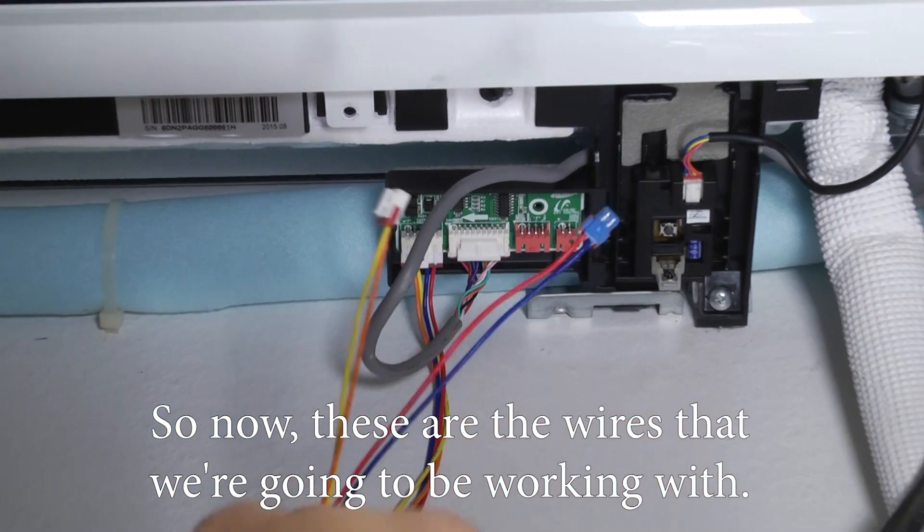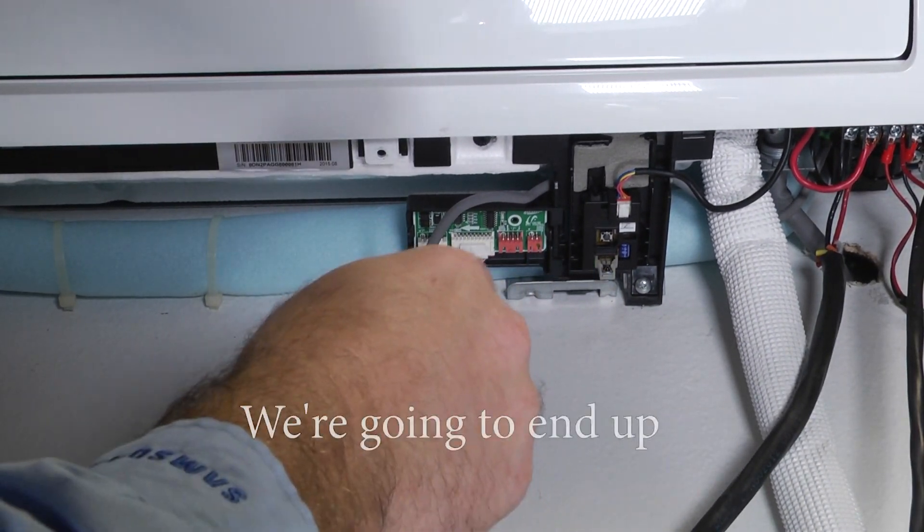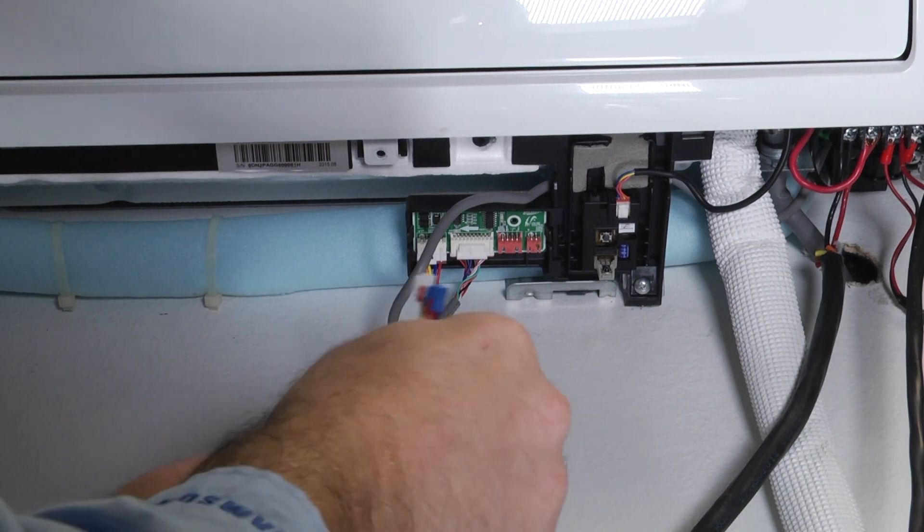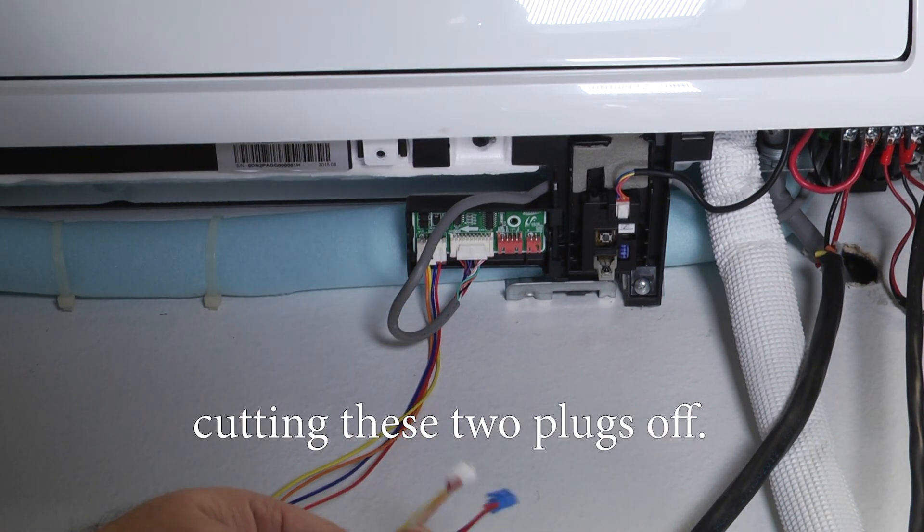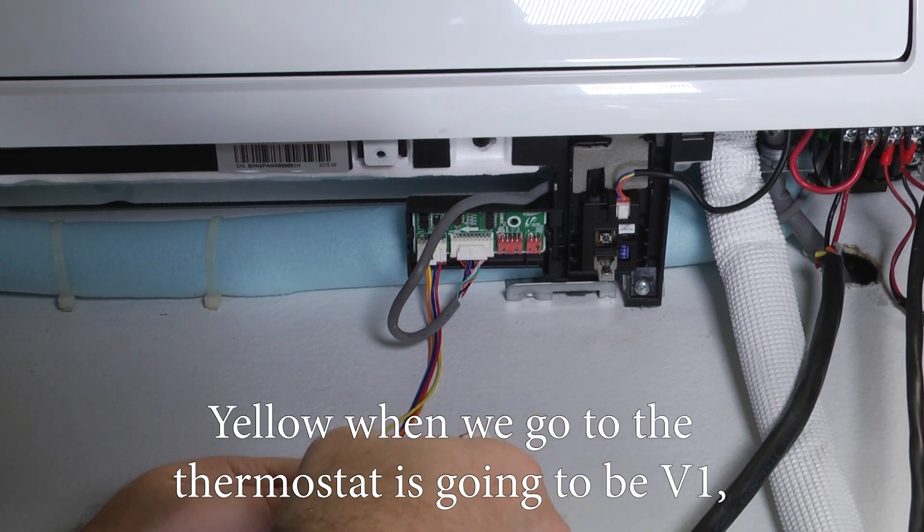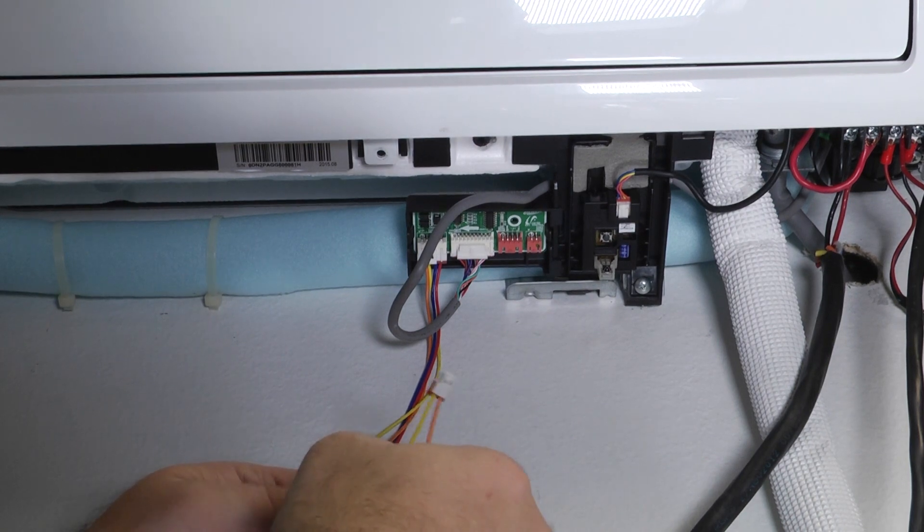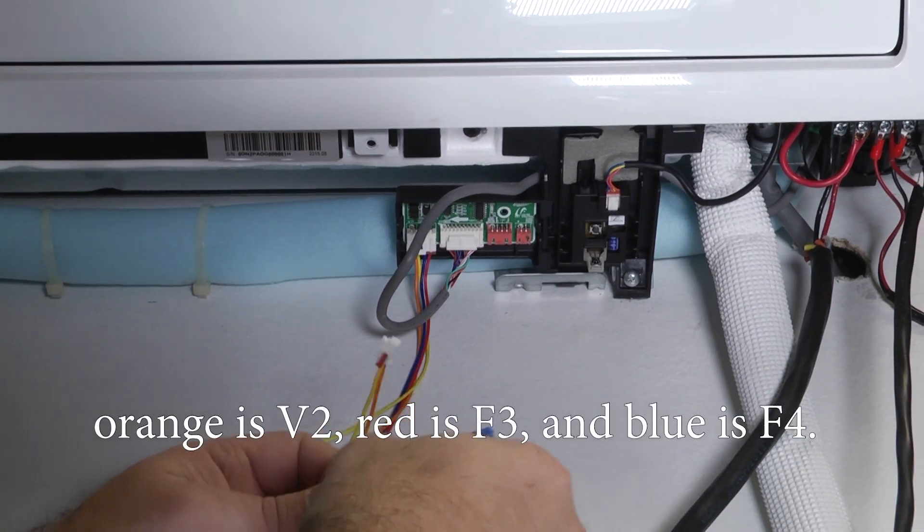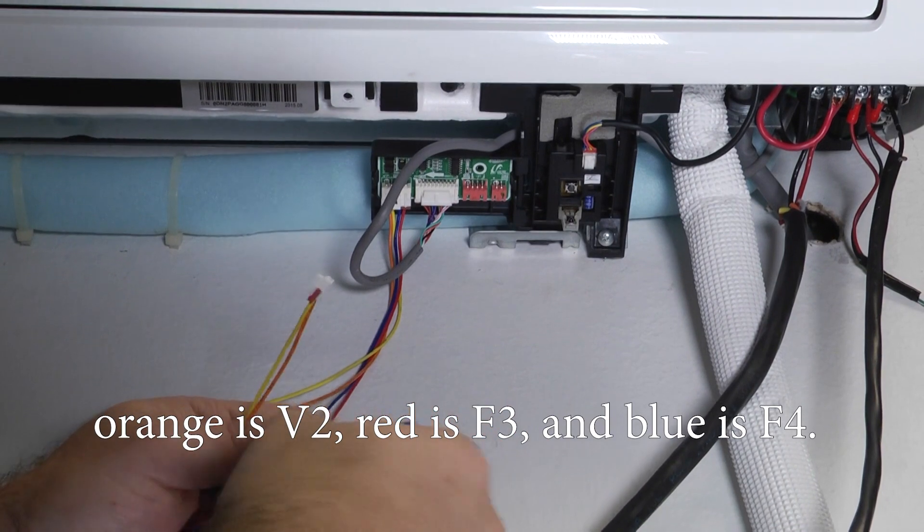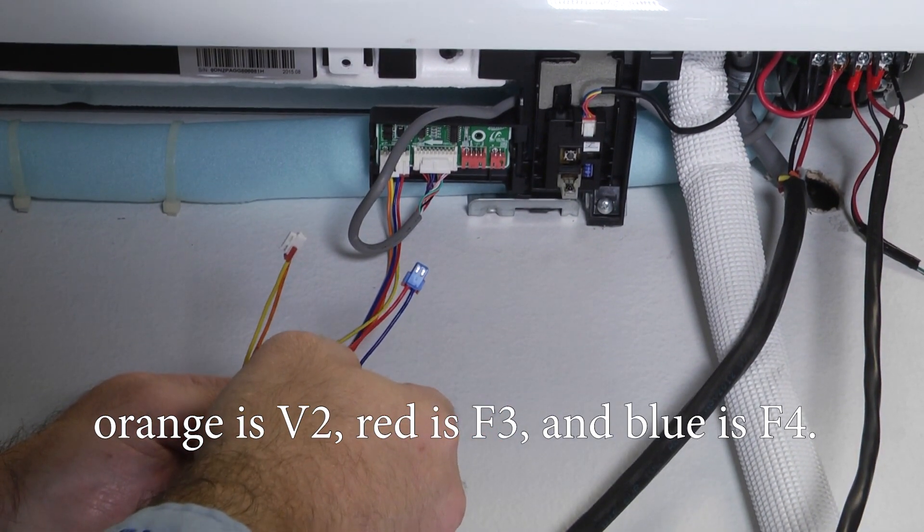So now these are the wires we're going to be working with. We're going to end up cutting these two plugs off and yellow when we go to the thermostat is going to be v1, orange is v2, red is f3, and blue is f4.